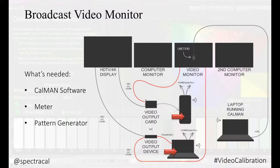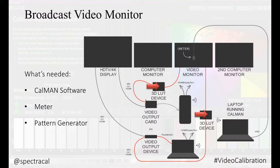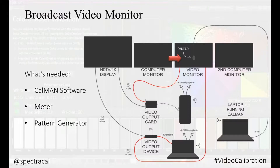Most of the work for correcting the reference monitor is with a 3D LUT. You can create one for editing software, or add a LUT box to the source path and create a corrective LUT there, or in some cases with newer monitors, you can load a corrected 3D LUT directly into the display itself.